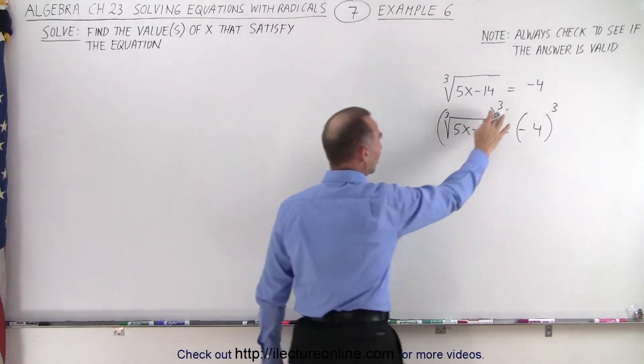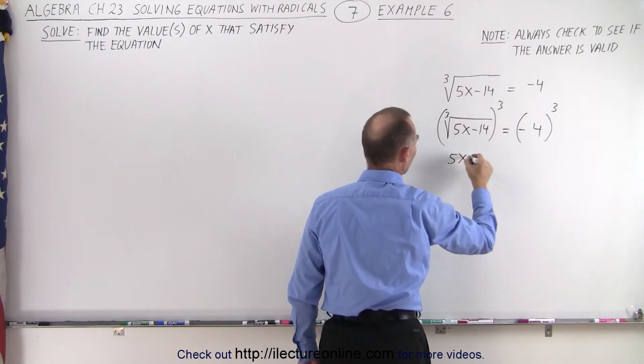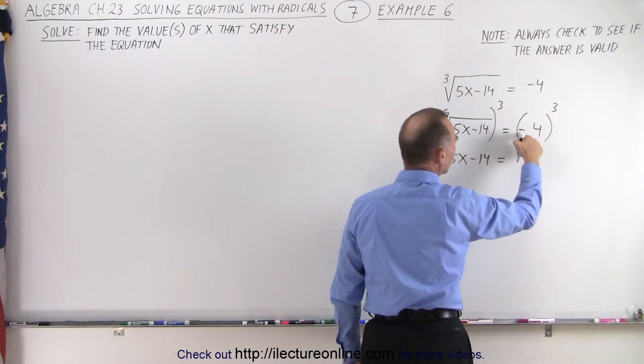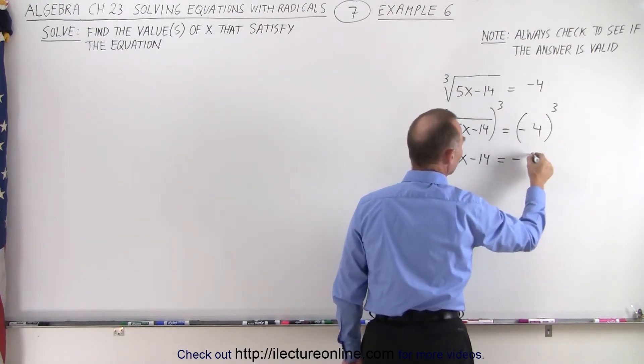So on the left side, this simply undoes the radical. We end up with 5x minus 14. On the right side, the negative cube is still a negative, and the 4 cubed is 64.